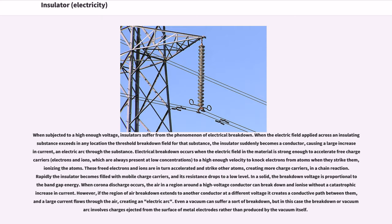Electrical breakdown occurs when the electric field in the material is strong enough to accelerate free charge carriers, electrons and ions, which are always present at low concentrations, to a high enough velocity to knock electrons from atoms when they strike them, ionizing the atoms. These freed electrons and ions are in turn accelerated and strike other atoms, creating more charge carriers in a chain reaction. Rapidly the insulator becomes filled with mobile charge carriers, and its resistance drops to a low level.